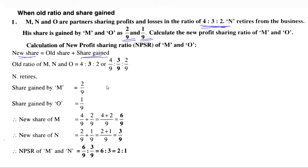We'll arrange things in sequence. The old ratio of M, N, and O — all three partners — is 4:3:2, which can be written as 4/9, 3/9, and 2/9. Next, we look at the share gained by each remaining partner separately. The share gained by M is 2/9 — that gain comes from N's share.